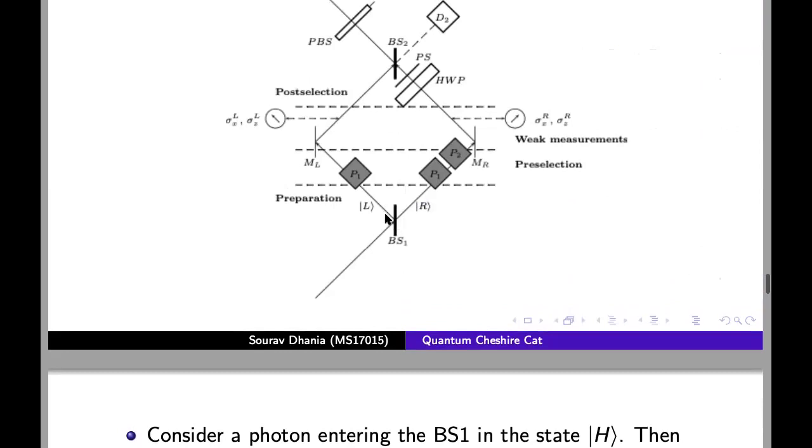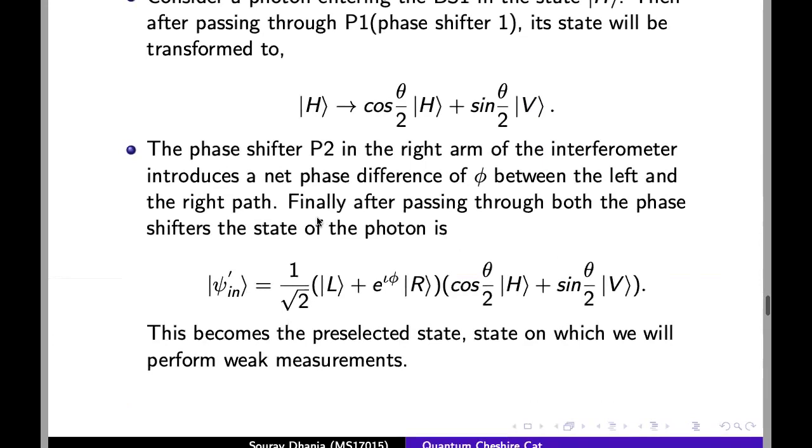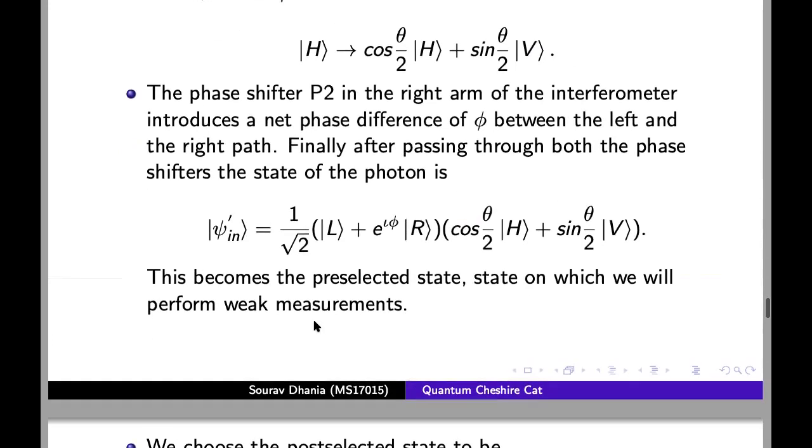This will ensure that the phase difference between the left and right path is phi. We have also taken into account that after passing through beam splitter 1, left and right arms will have phase difference of phi by 2. So this phi will also take into account this phi by 2 plus an additional phase difference we want to incorporate between left and right arms. Finally, after passing through both the phase shifters, the state of the photon is given by this. And this becomes the pre-selected state in which we will perform weak measurements.